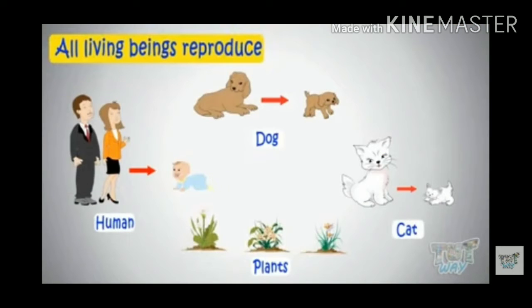Students, in this diagram there are so many examples of living beings. You all know all living beings reproduce. Like animals or organisms, plants also reproduce. There are two ways in which plants reproduce.